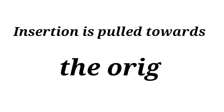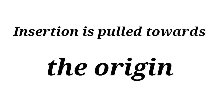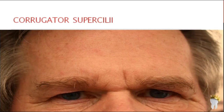When you know the origin and insertion of a muscle, you'll see that the insertion is pulled towards the origin, so you will instantly know the action of the muscle. Let's move on to the next muscle — corrugator supercilii.